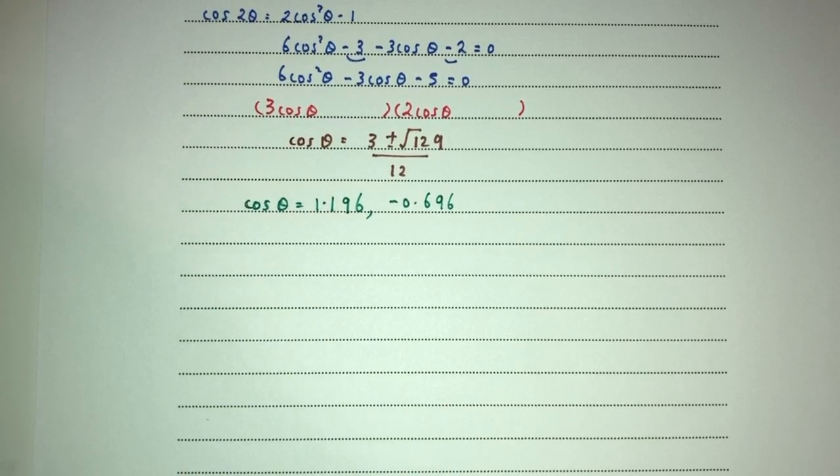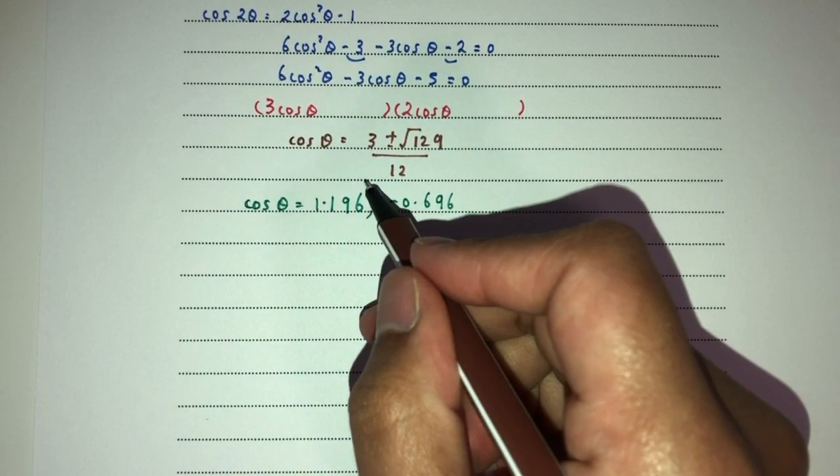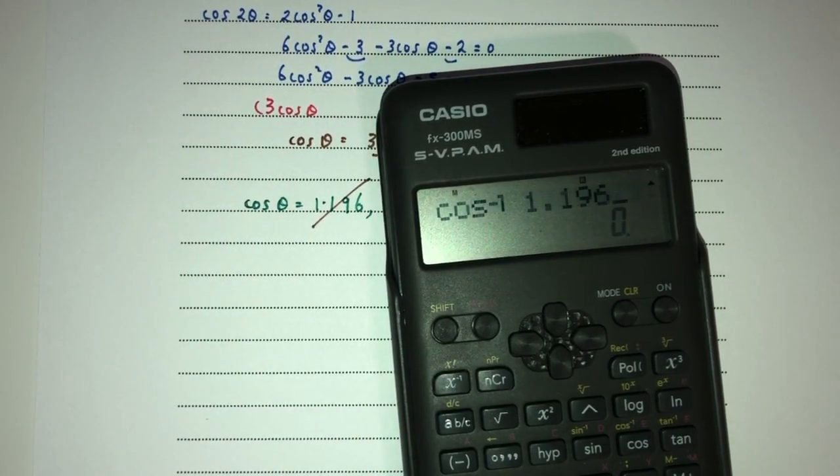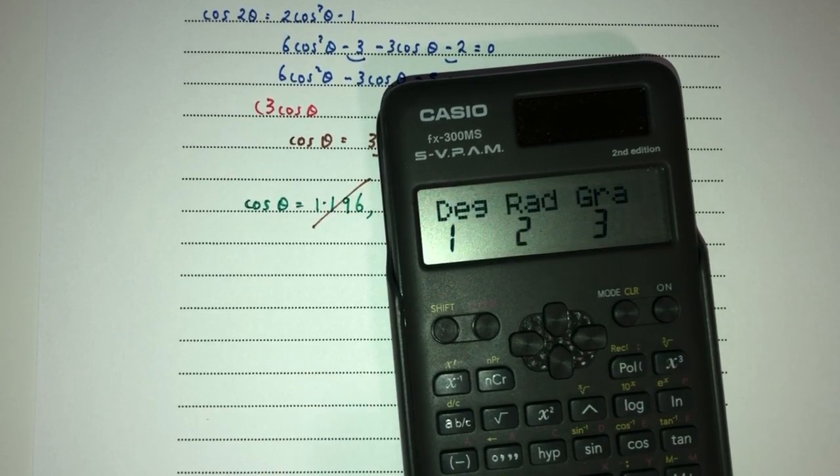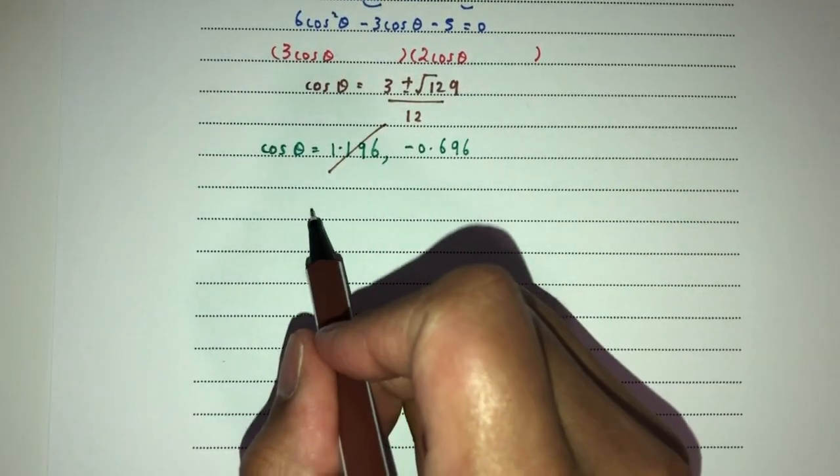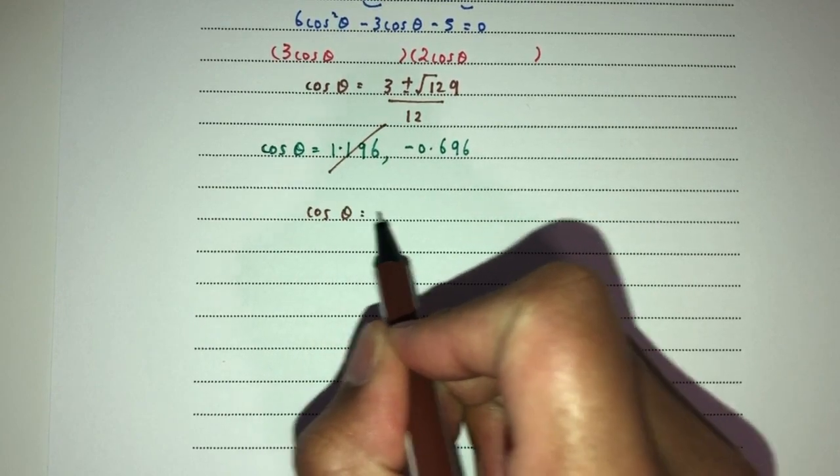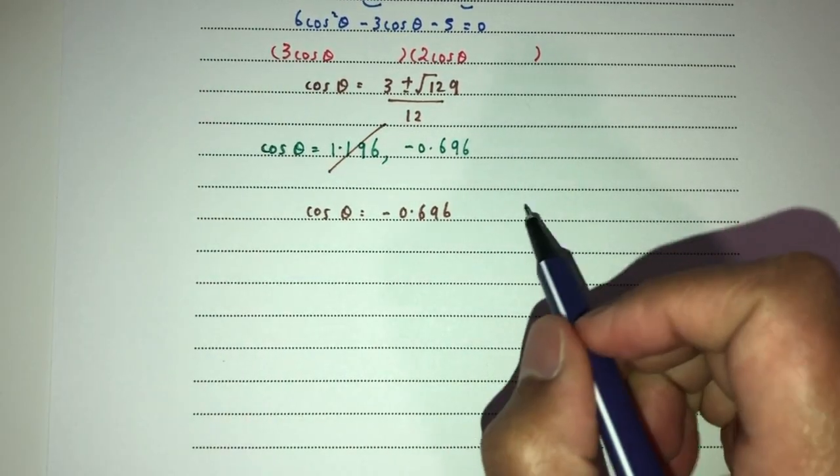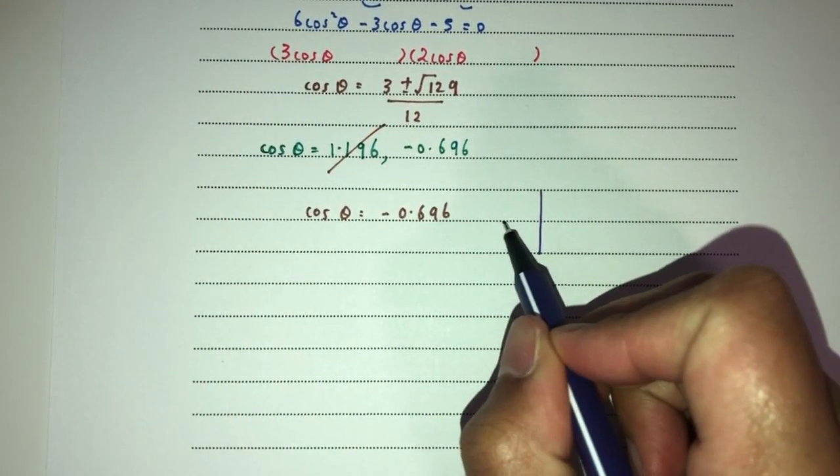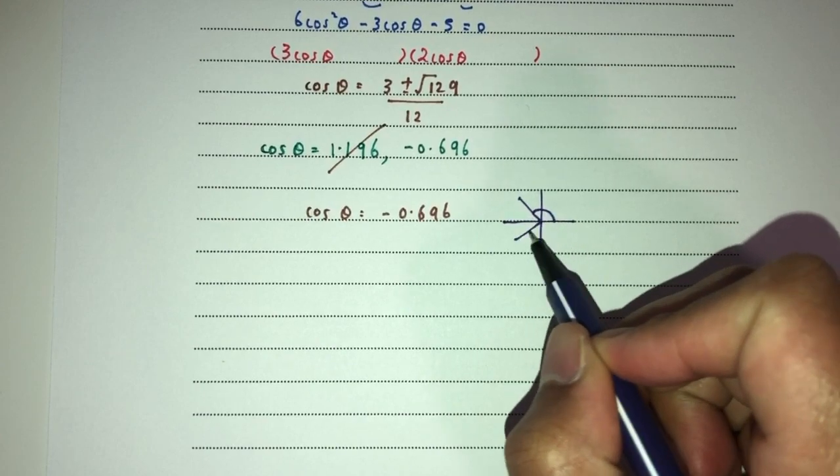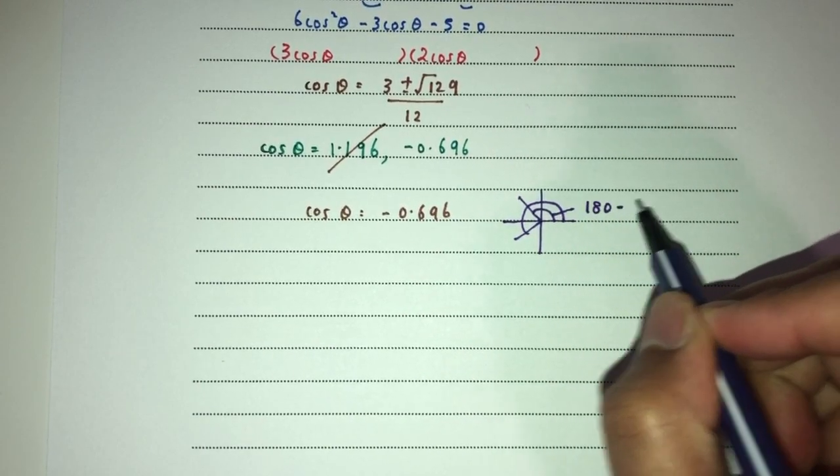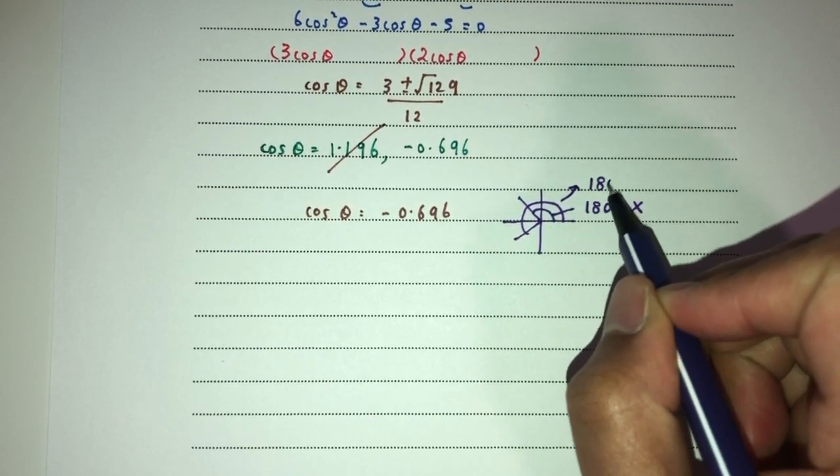Now you will have two values for theta, obviously. So first one will be positive and the other one will be negative. So cos of theta, first value will be 3 plus root of 129 divided by 12, sorry. That should be 1.196. Or it could be 3 minus root of 129 divided by 12, that should be minus 0.696. Obviously, we should know cos can only be between the value of 1 and minus 1, so this will be too much. It will not be good.